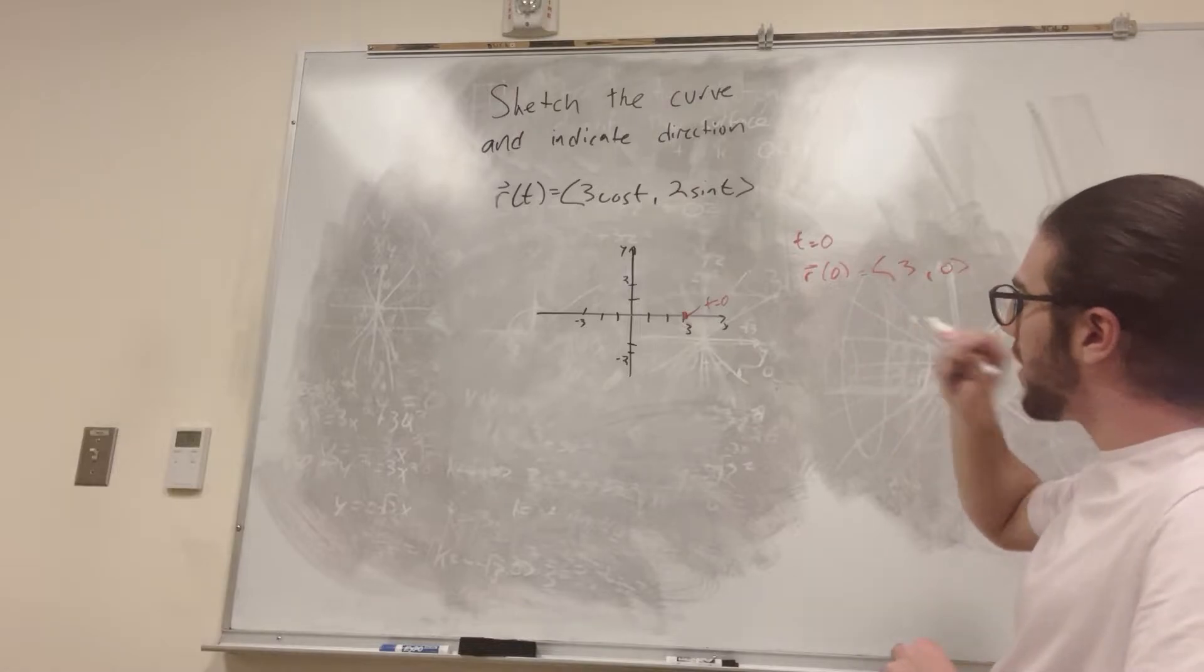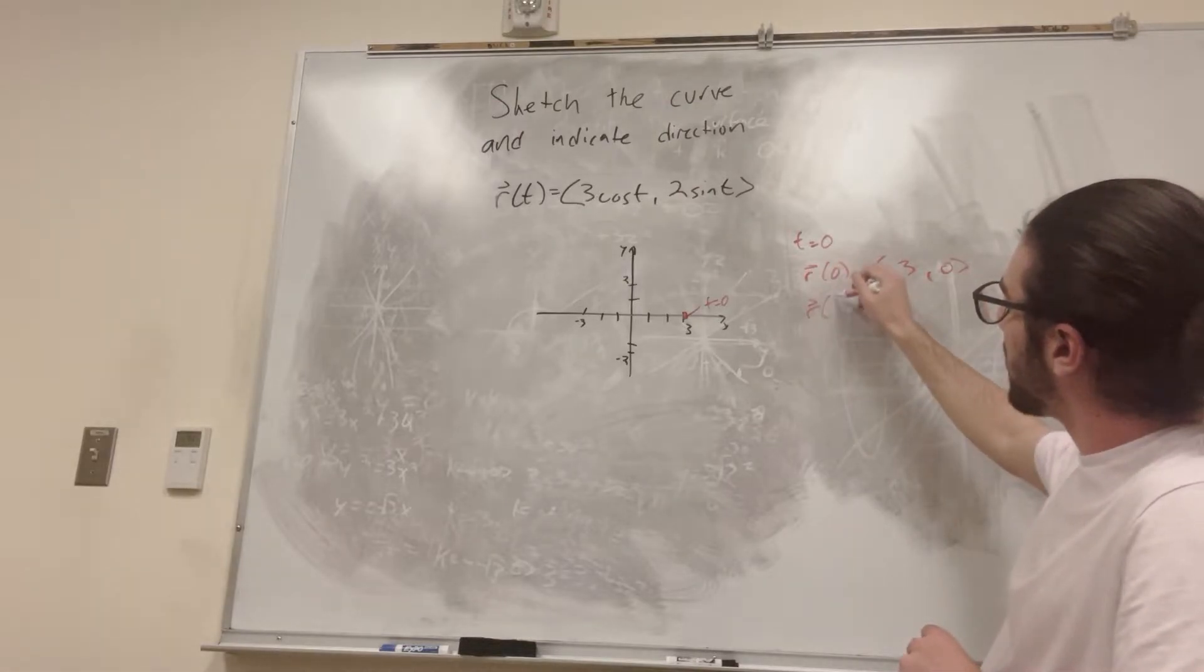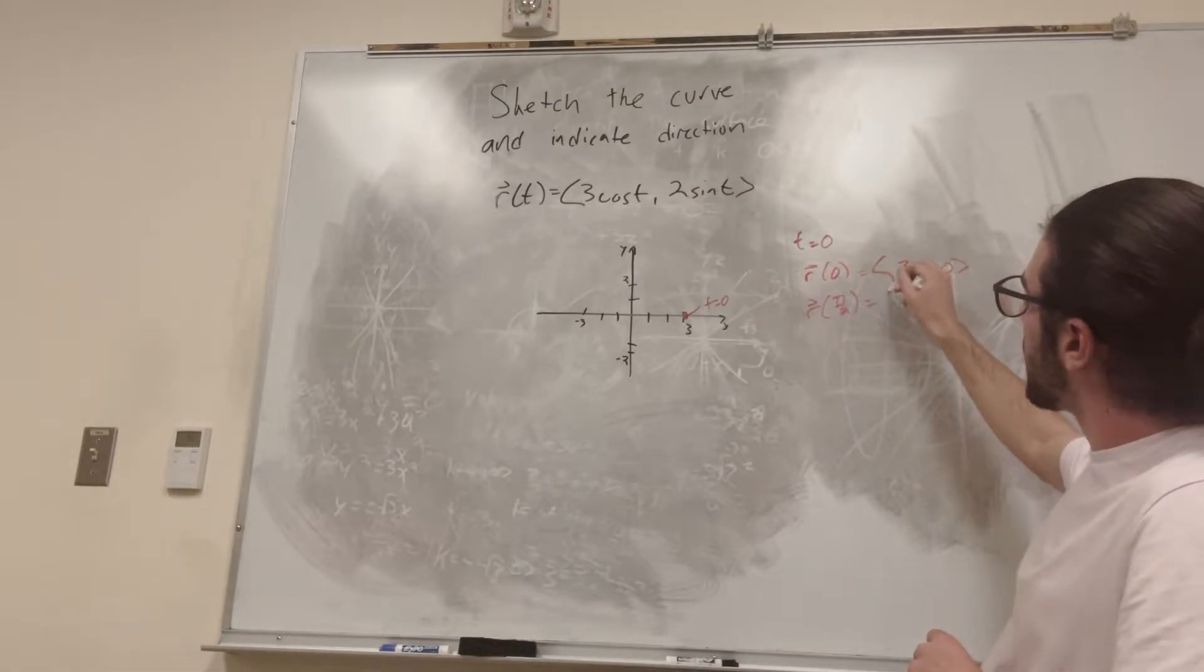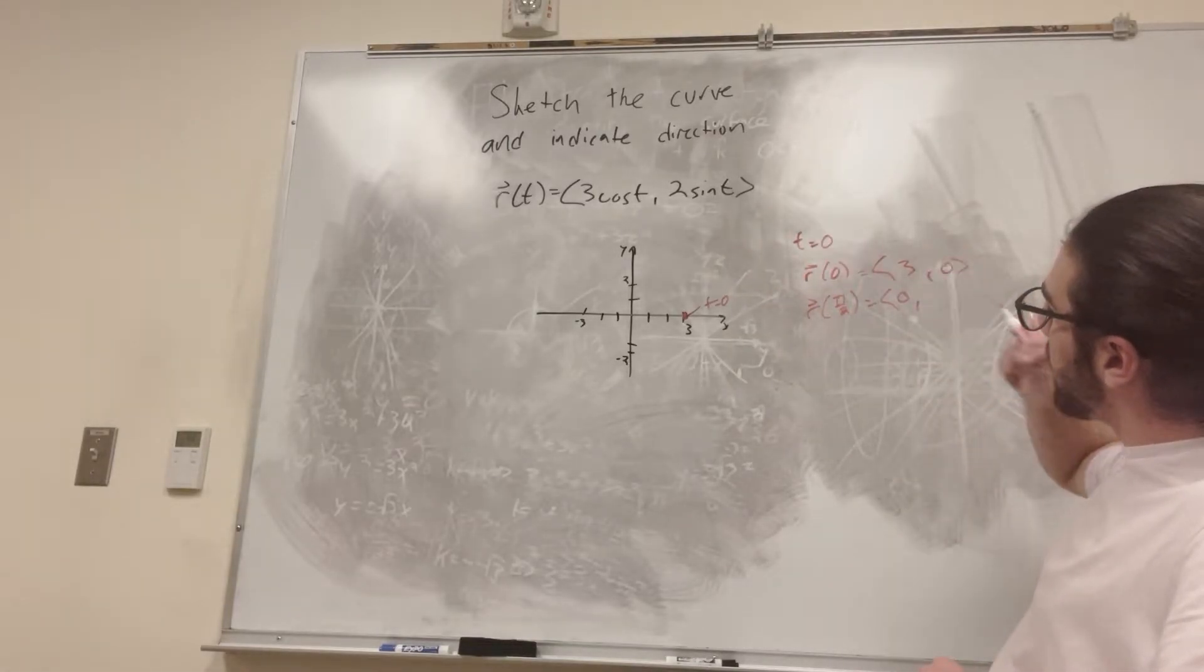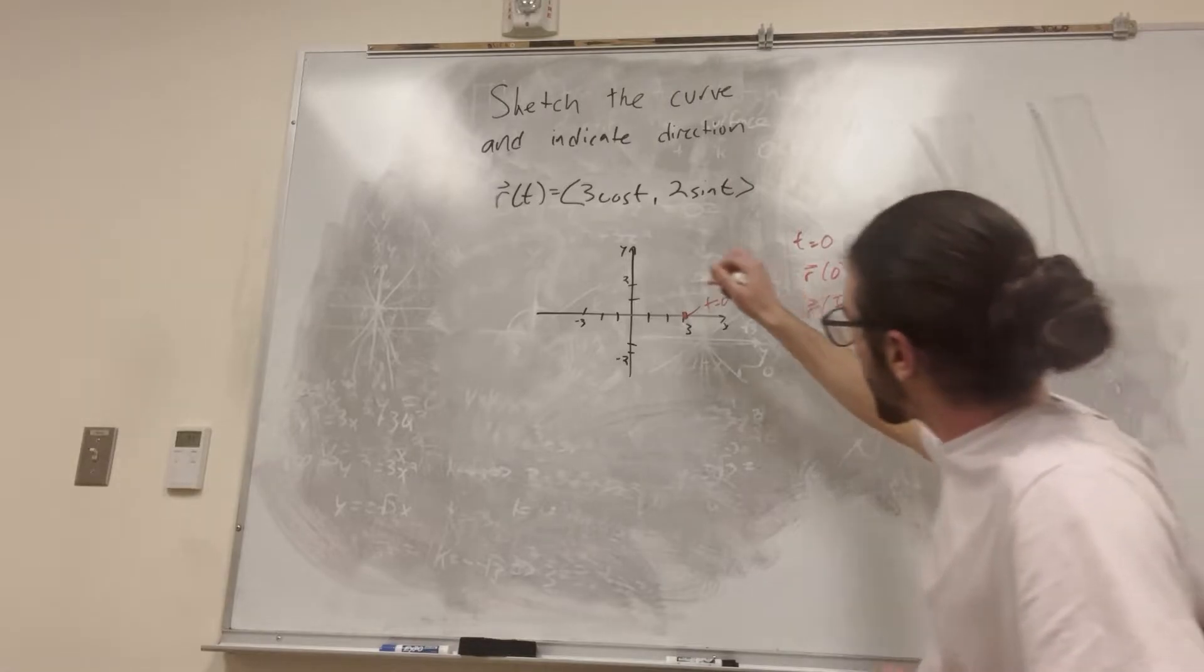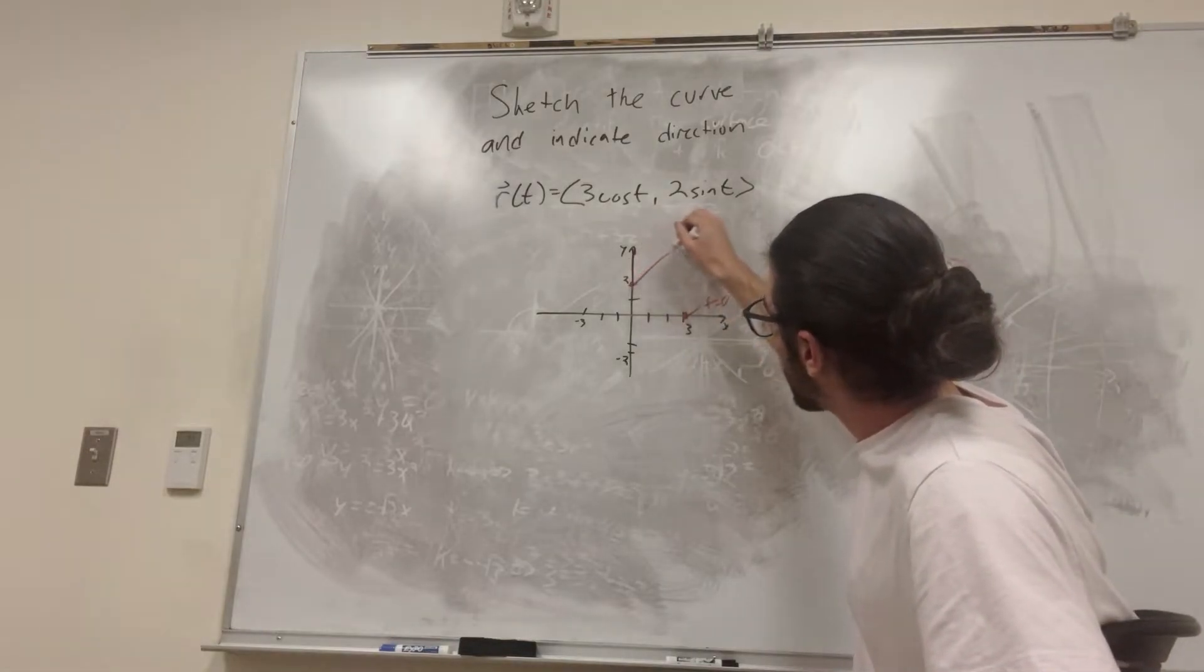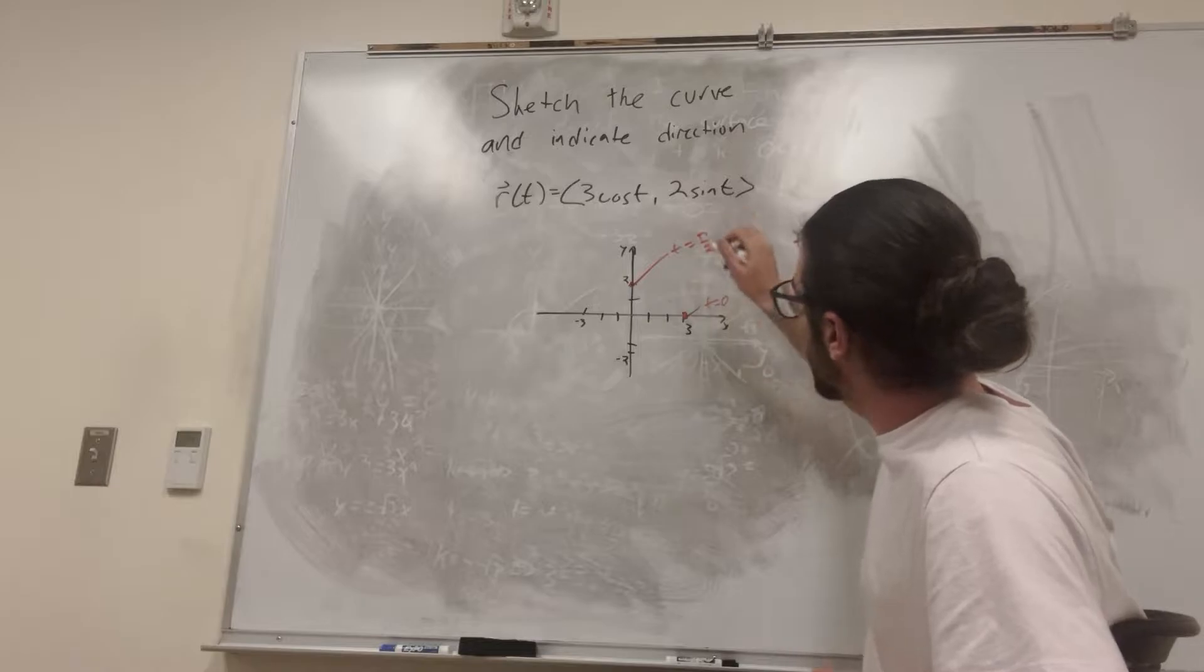Alright, so let's do pi over 2 next. So R of pi over 2, cosine of pi over 2 is 0, and then sine of pi over 2 is going to be 1, so it's going to be 2. So our next point. This is t is equal to pi over 2.